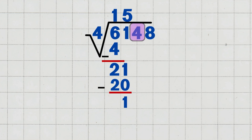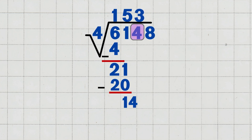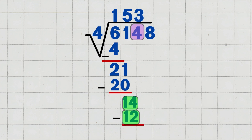Step four: bring down the next digit, four. Bring down the four, making the new number fourteen. Fourteen divided by four equals three, since four goes into fourteen three times. Write three in the quotient above the four. Multiply three times four, which equals twelve. Subtract fourteen minus twelve, which equals two.